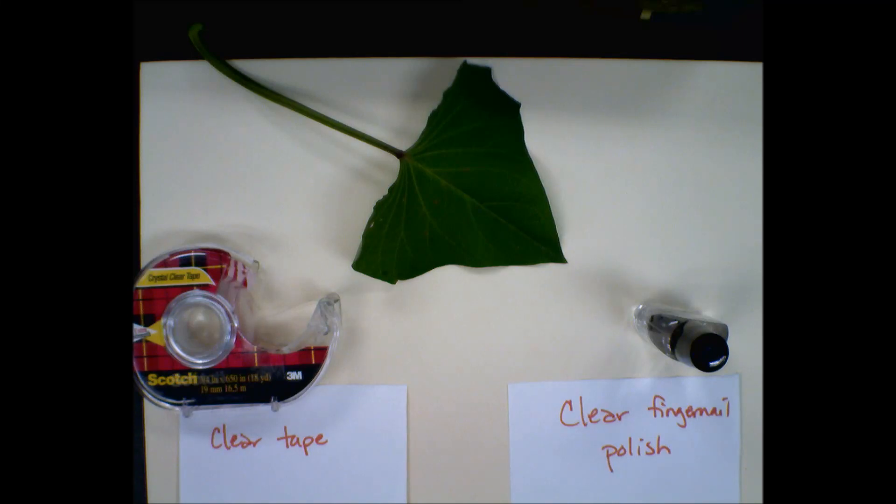This is a different type of slide that we're going to learn how to make and it's called making a cast. What we're going to do rather than look at a whole depth of a cell, we just want to see the surface, and to do that we need to make a cast.